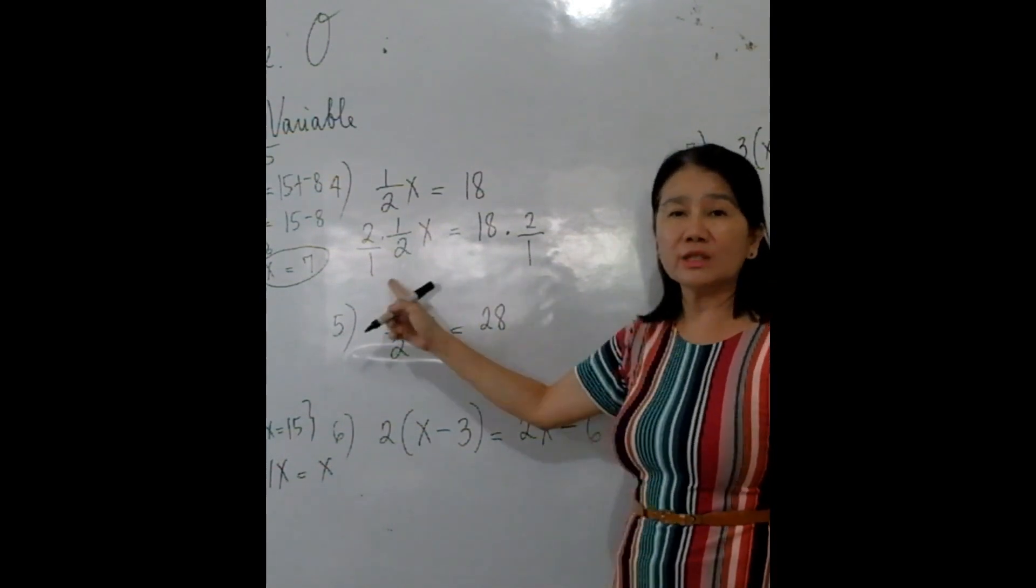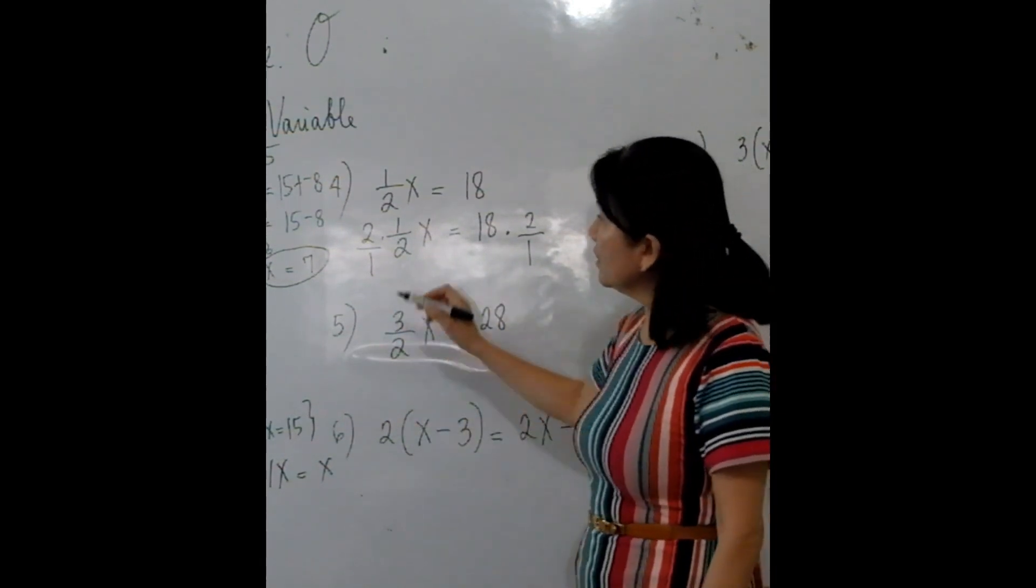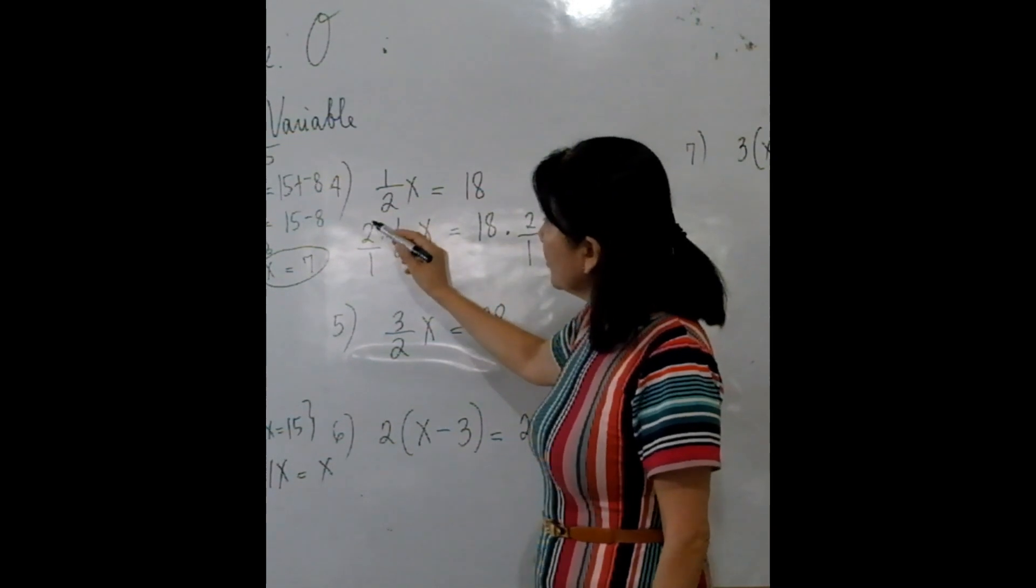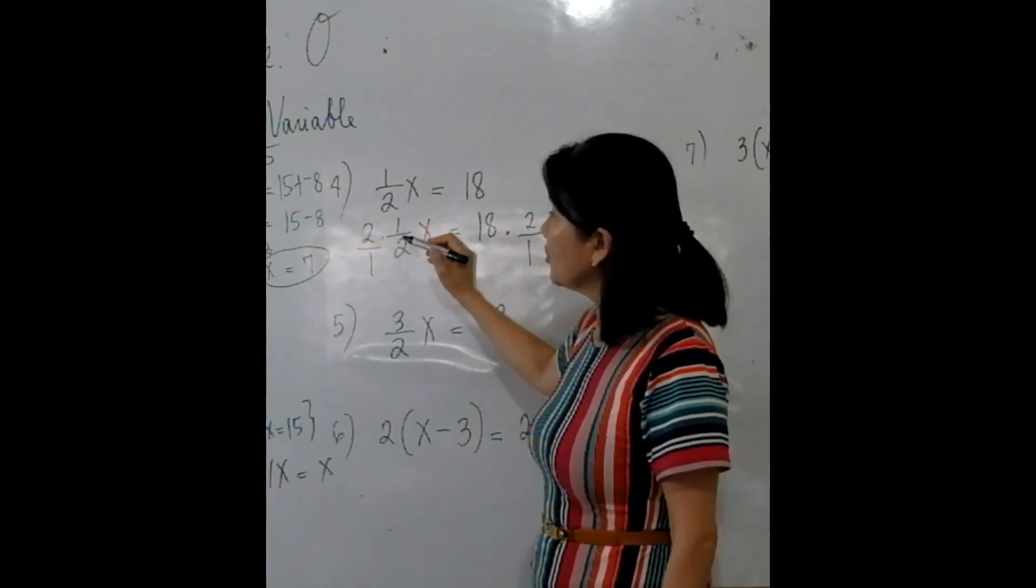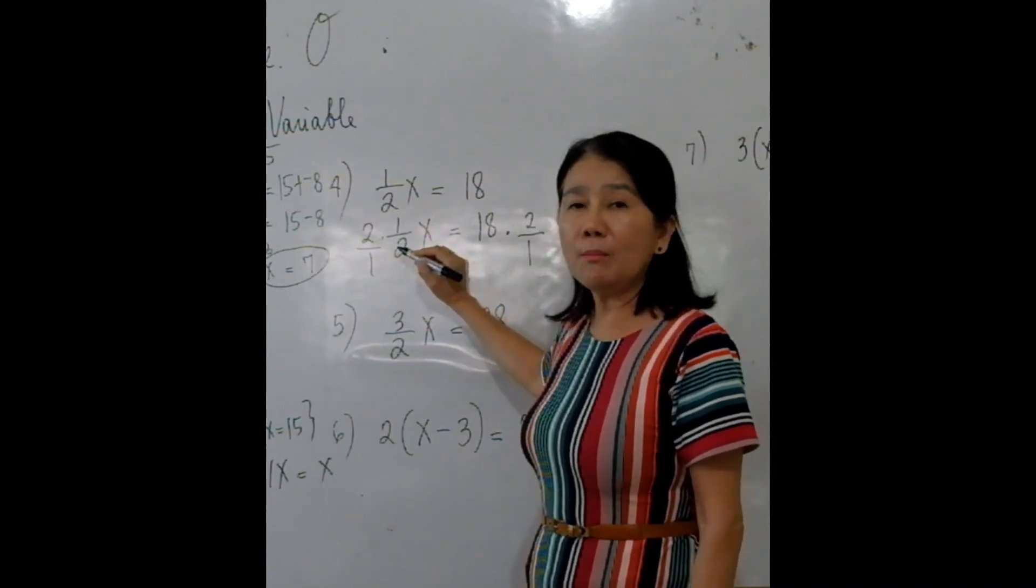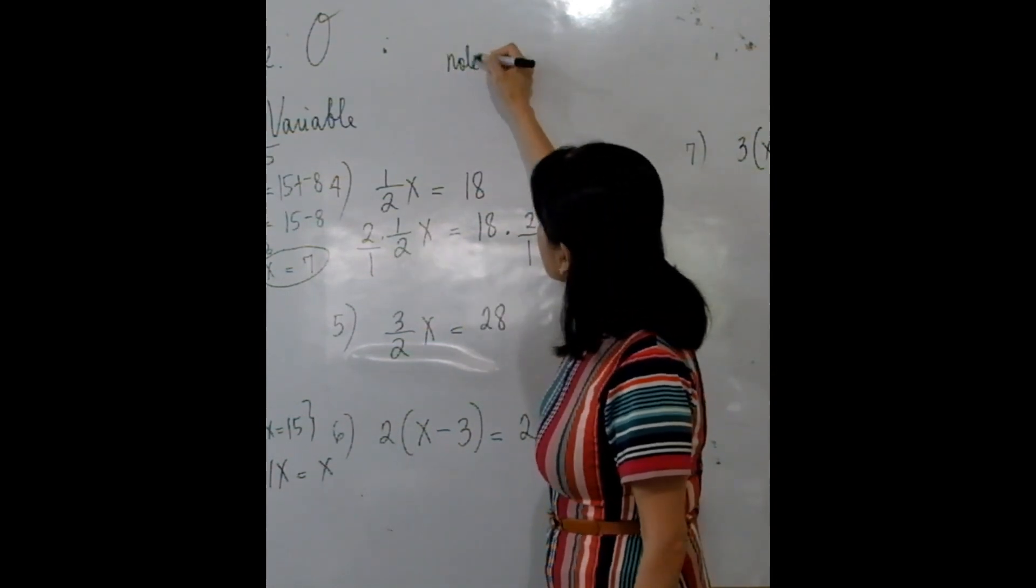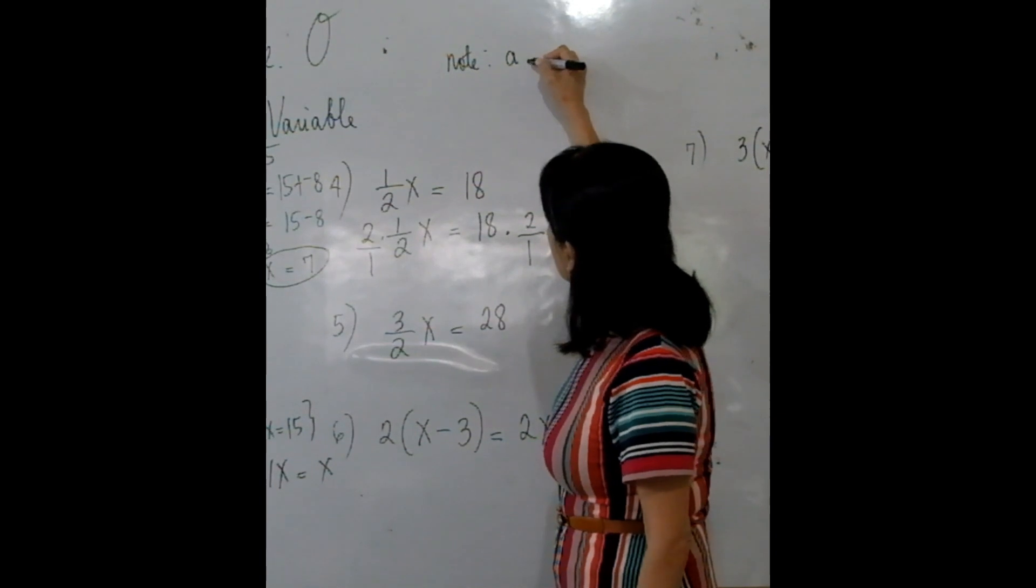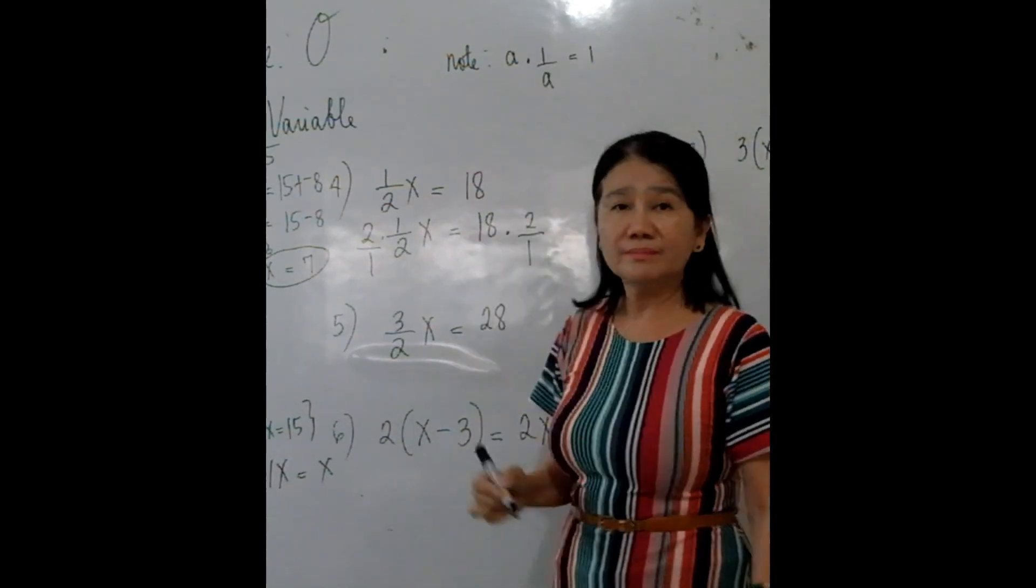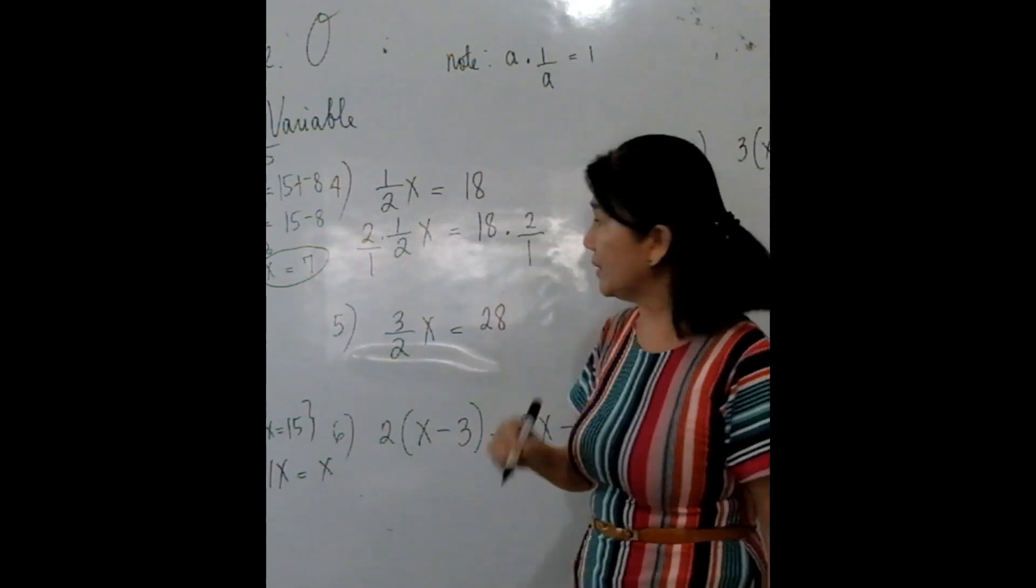Again, 2 over 1 was multiplied to both sides. If you can see, you can also, aside from cancellation, apply here the multiplicative inverse. The multiplicative inverse says that if you have A, and A is multiplied to 1 over A, you get 1. That's the multiplicative inverse property.